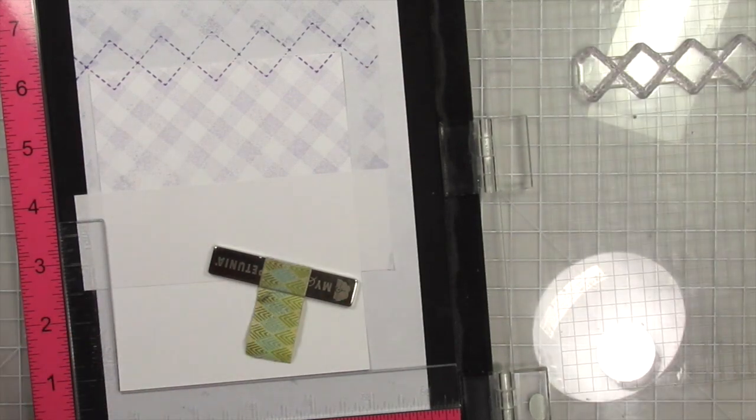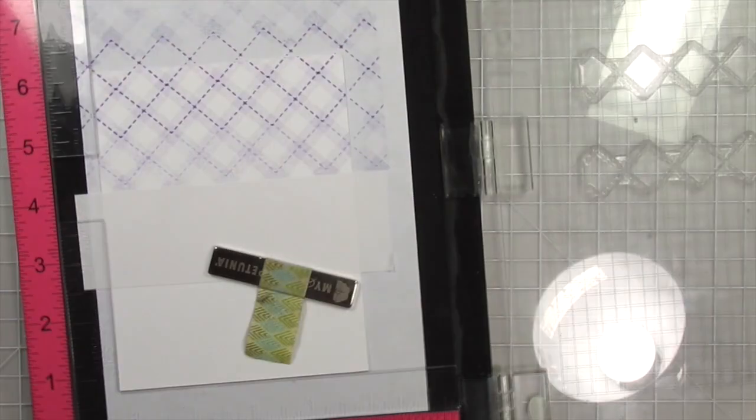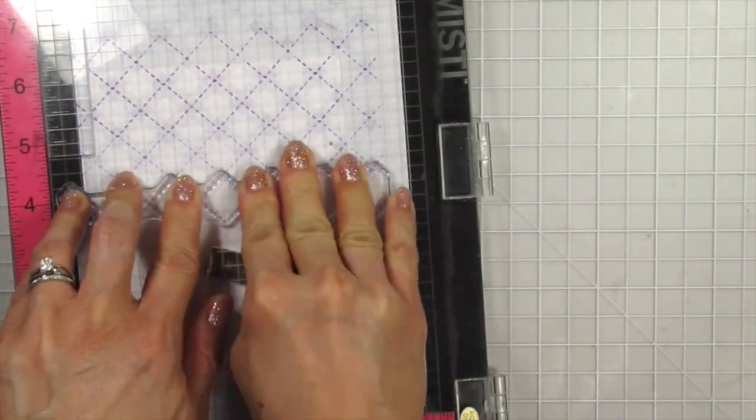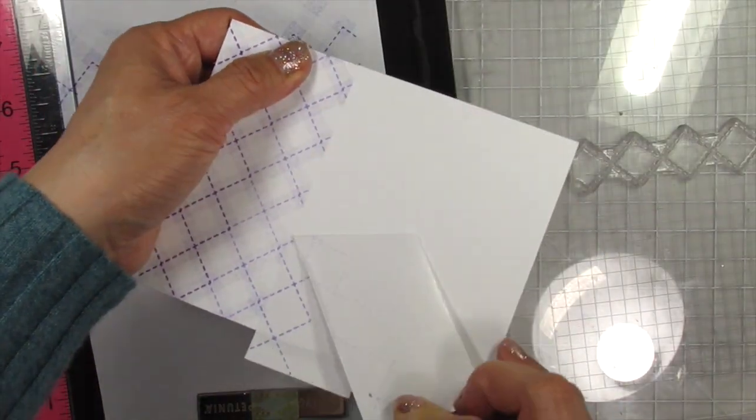However I thought it looked too plain so I replaced the mask and stamped the same pattern again in reverse order on the white sections to create a busier pattern and I like that much better.